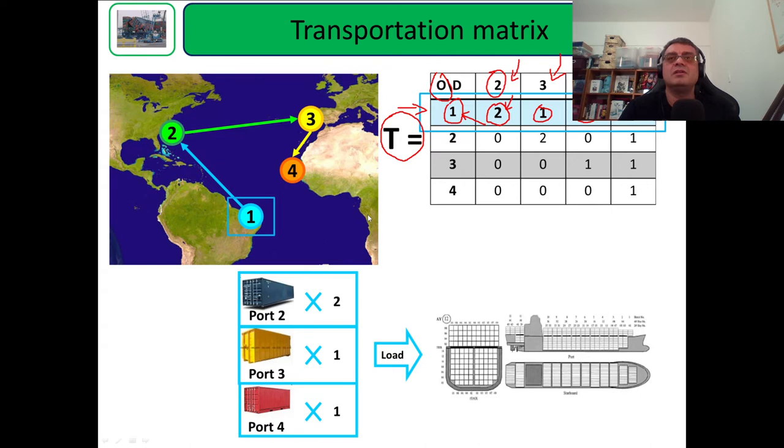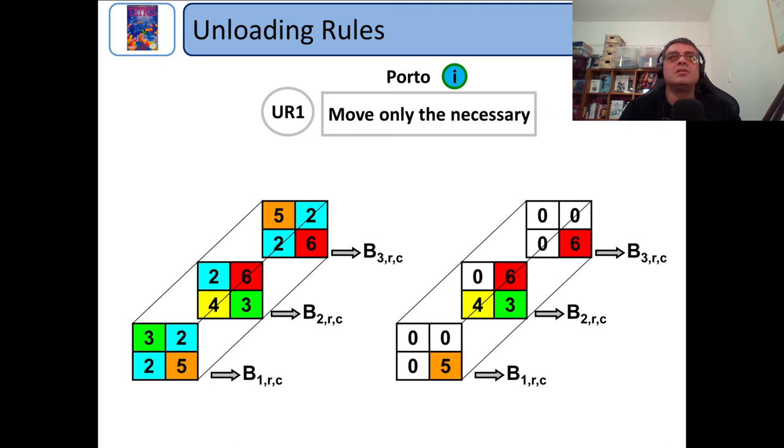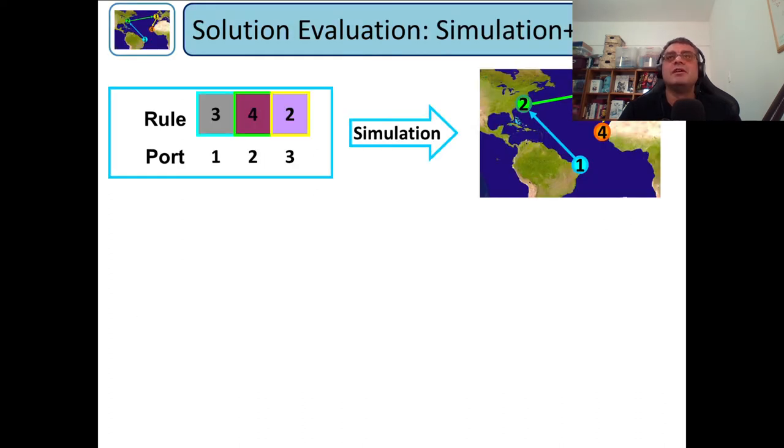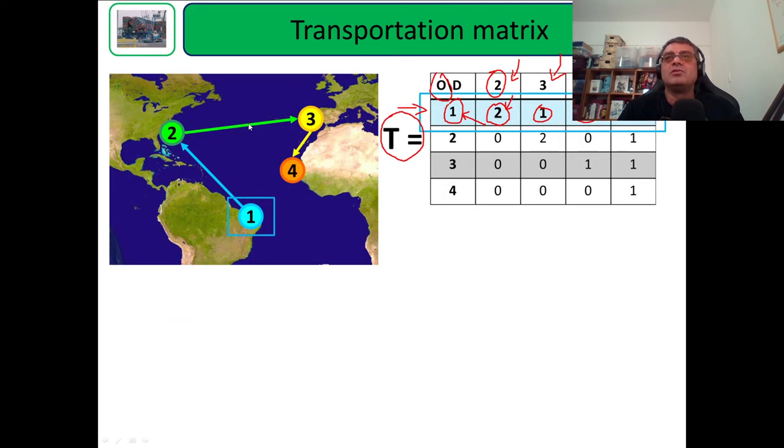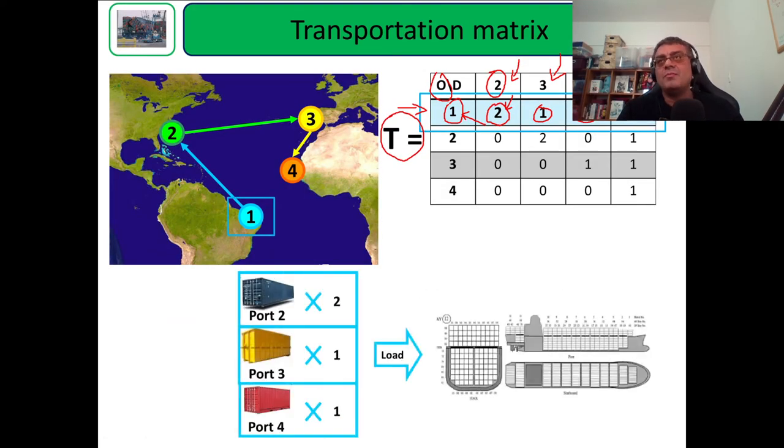As we arrive in each port, we can see how many containers we should load at this port. Remember also, we have to unload containers each time we arrive in a certain port. This loading and unloading rules we already talked about, and now we're gonna define how we can apply the rules according to this transportation matrix to load containers. This transportation matrix will give this information.